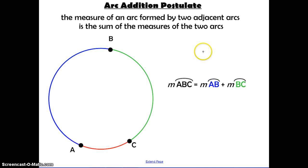Here's the arc addition postulate, and this tells us that the measure of an arc formed by two adjacent arcs is the sum of the measures of the two arcs. Now we've dealt with segment addition and angle addition postulates before. This is the same idea. So what this tells us is the measure of arc ABC is going to be equal to the measure of arc AB plus the measure of arc BC. So you can add two adjacent arcs to get the sum of the two arcs together.